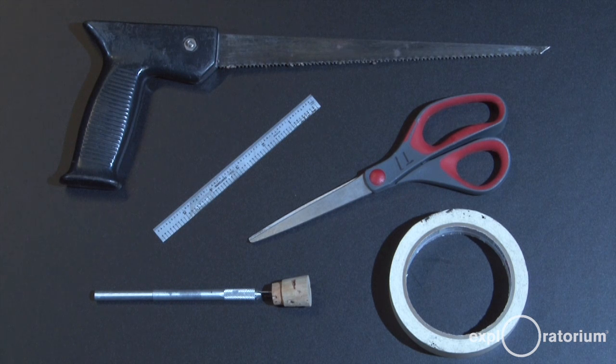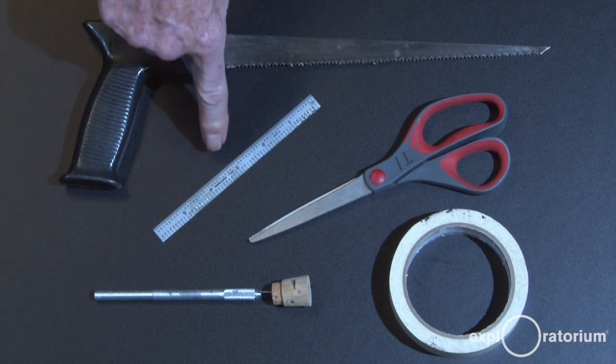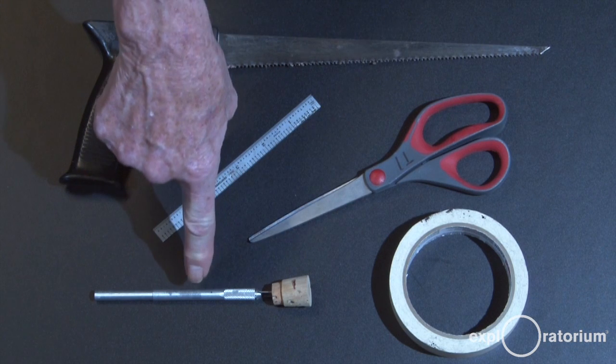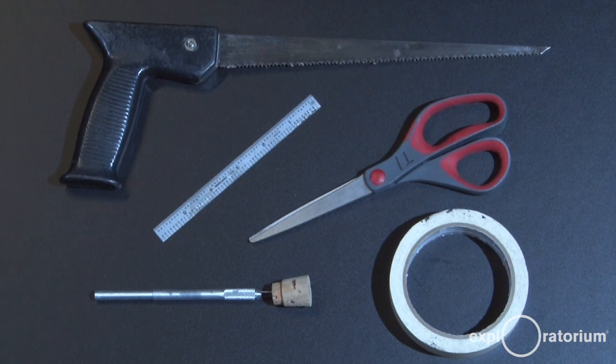The tools I used to build the spectrometer were a wood saw, a metal straight edge, a razor knife, a pair of scissors, and some tape.